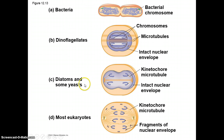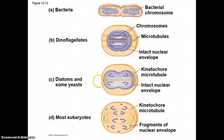Diatoms, which make diatomaceous earth, usually have sparkly exoskeletons, and some types of yeast also have an intact nuclear envelope. As you can see, these chromosomes are getting pulled to opposite sides — so it's not quite what we would consider standard mitosis.